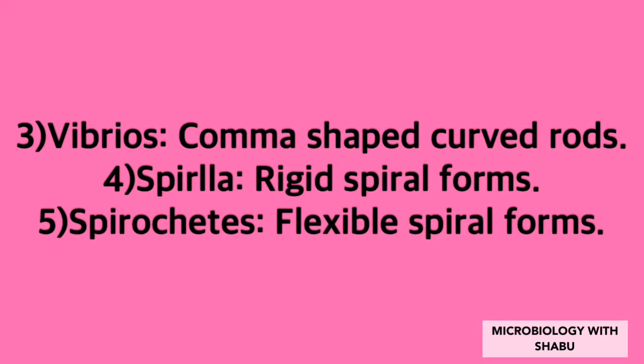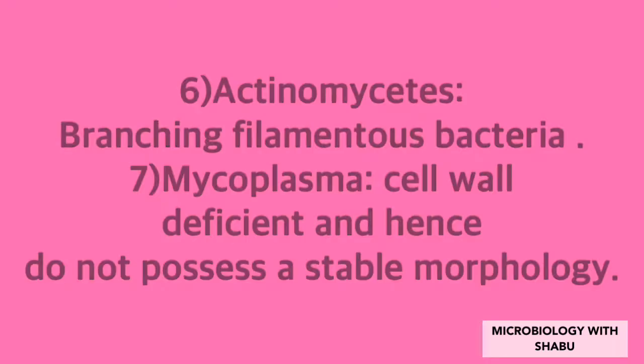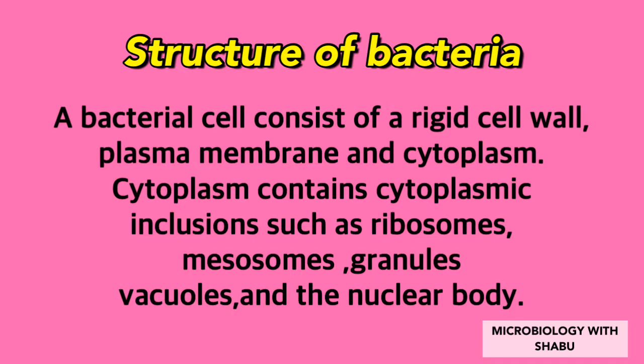Six: actinomycetes — branching filamentous bacteria. Seven: mycoplasma — cell wall deficient and hence do not possess a stable morphology. A bacterial cell consists of a rigid cell wall, plasma membrane, and cytoplasm.